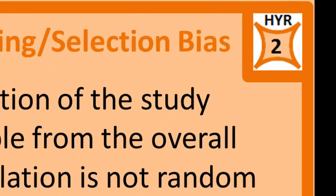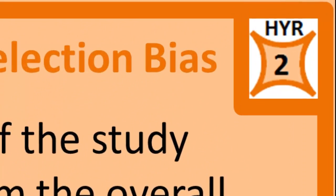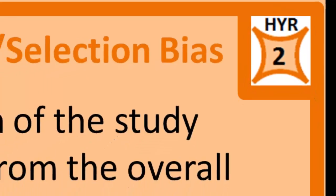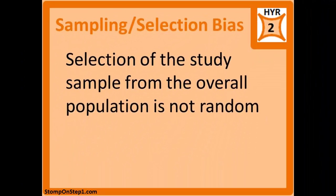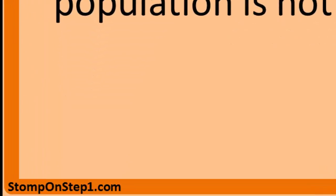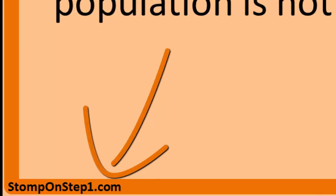You can see here I give sampling and selection bias a high yield rating of 2. It's a rating scale from 1 to 10 that gives you a rough estimate on how important each topic is for Step 1. If you want to learn more about that you can head to my website.